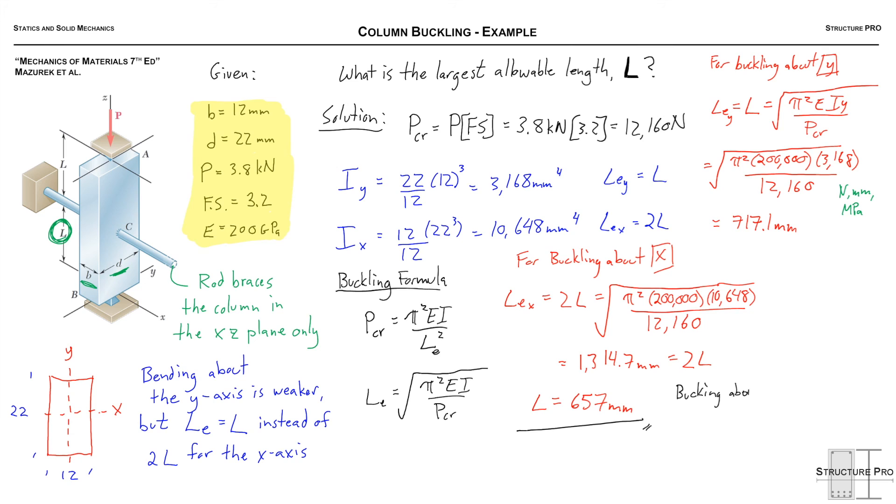So we can see that is less than the allowable length in the Y direction for buckling about the Y direction so we conclude that buckling about the stronger axis actually governs due to the boundary conditions. So just a quick question here to reinforce our knowledge about column buckling and thanks for watching, great work.